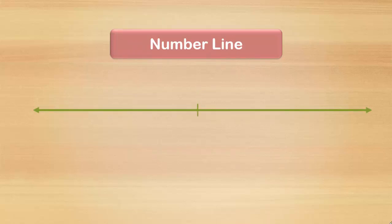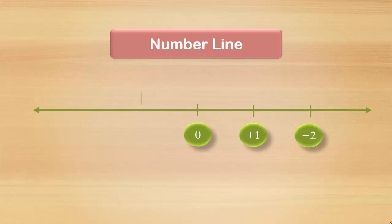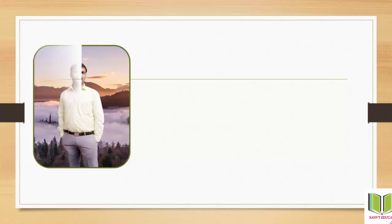We can draw a number line beginning with zero in the middle, then positive one, positive two on the right-hand side, and on the left-hand side we have minus one, minus two, and so on.